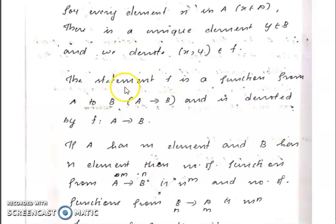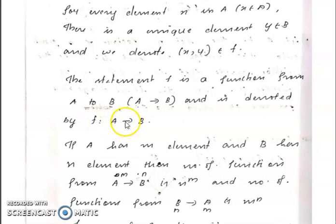The statement 'F is a function from A to B' is denoted by F: A → B. If A has M elements and B has N elements, then the number of functions from A to B is N raised to M.